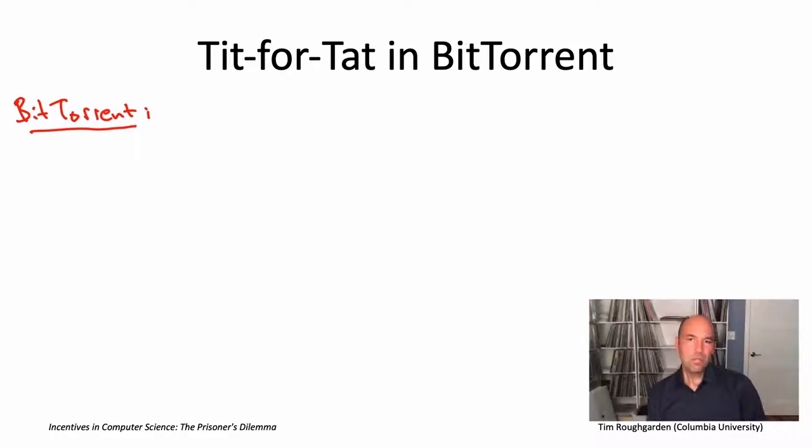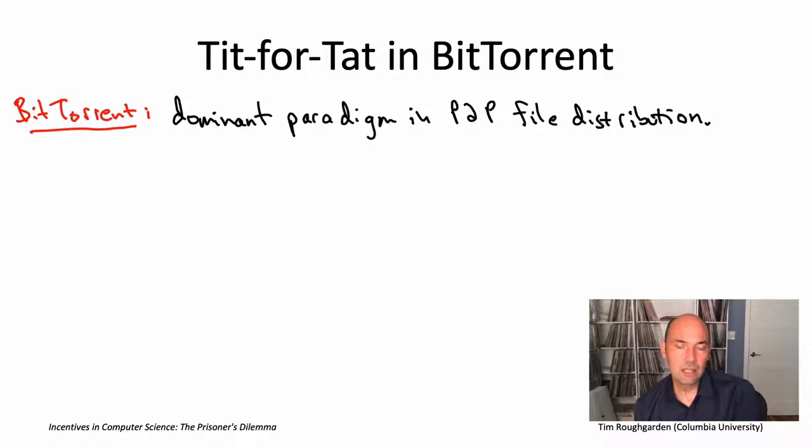BitTorrent is the dominant paradigm in peer-to-peer file distribution. To give you a somewhat outdated number, in 2013 roughly 80% of peer-to-peer file sharing traffic happened via the BitTorrent client. For example, if you downloaded one of the recent versions of Linux, you might well have used BitTorrent to do that.